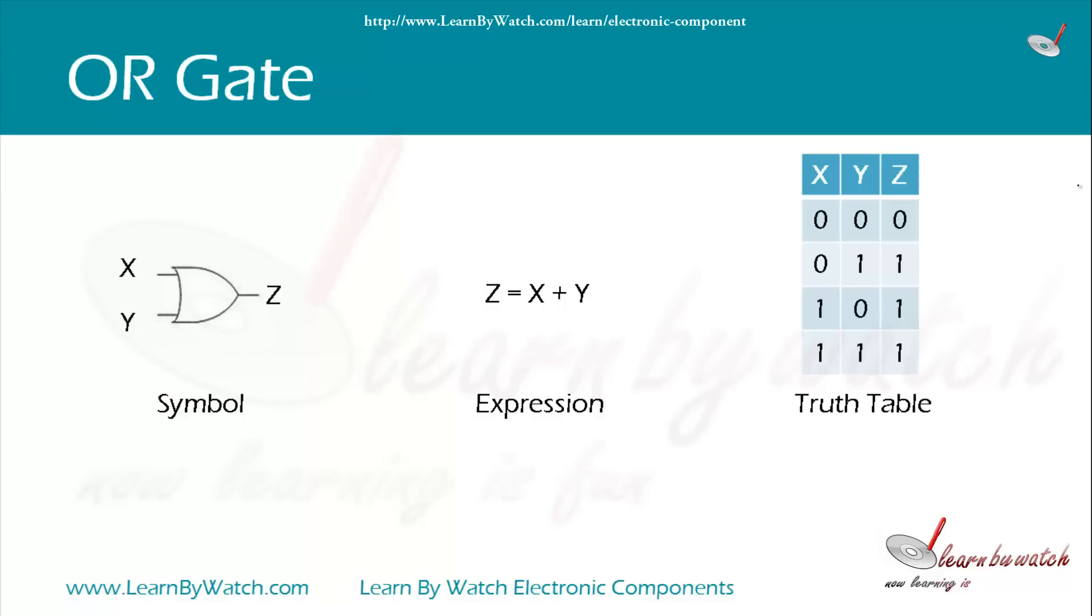According to this expression, the truth table of OR gate will be like this. Whenever any of the input is high, output will be high. In this truth table, you can see Y is high, then Z is high.